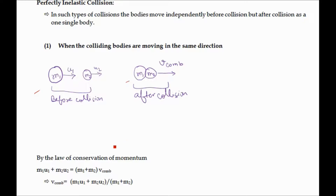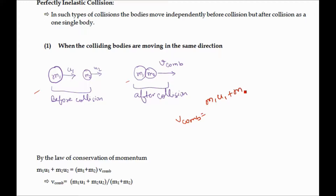By the law of conservation of momentum, the initial momentum is m1·u1 due to the first body and m2·u2 due to the second body, and the final momentum is (m1 + m2)·v_com. So: m1·u1 + m2·u2 = (m1 + m2)·v_com, which gives v_com = (m1·u1 + m2·u2) / (m1 + m2).